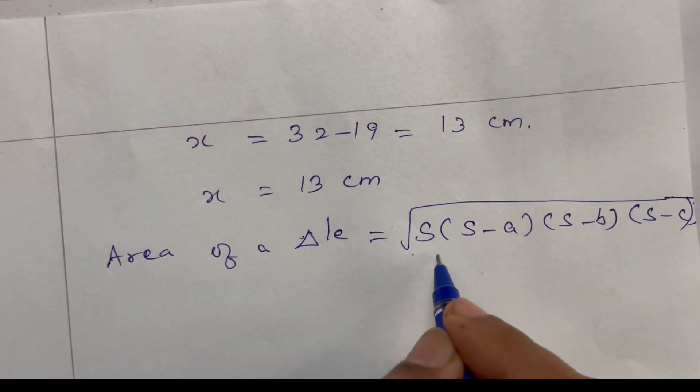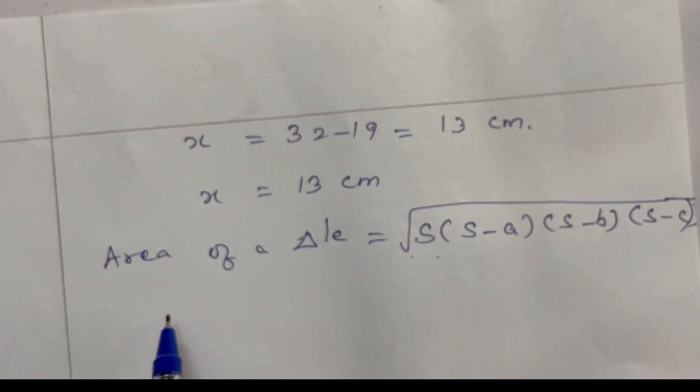S is the semi-perimeter, but given 32 is the perimeter.